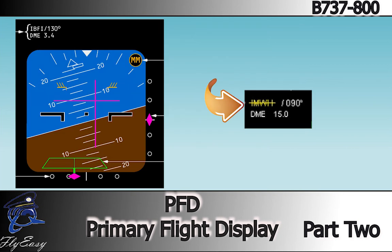If the tuned ILS frequencies disagree, the frequency display turns amber with an amber line through it.